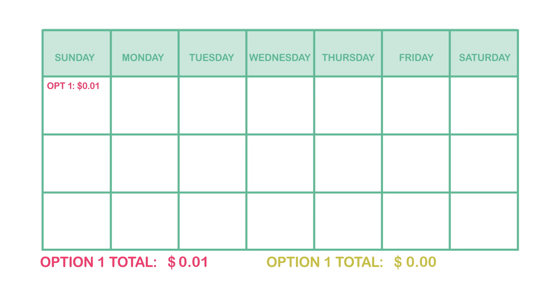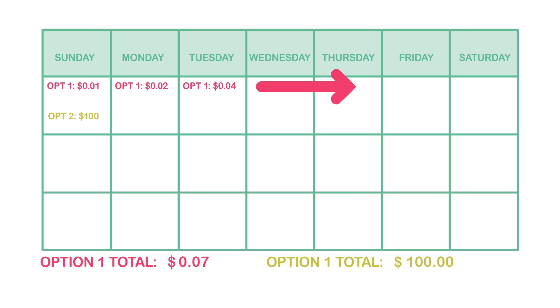Option number one might be that I'll pay you a penny today, tomorrow I'll pay you two cents, doubling each day thereafter. The other option would be I'll pay you a hundred dollars today and then an additional hundred dollars each day thereafter.